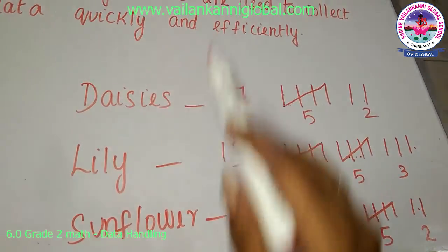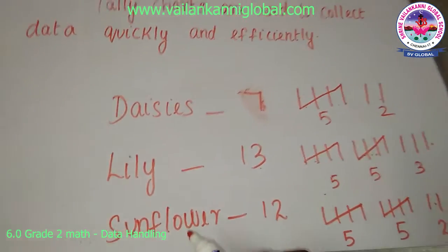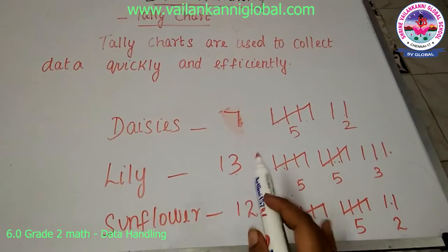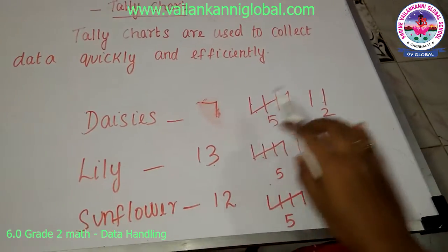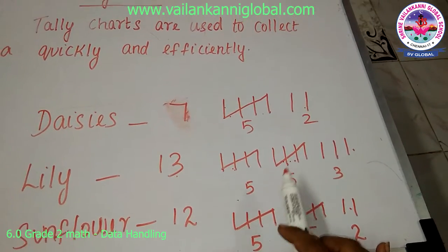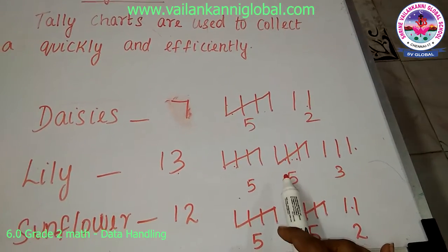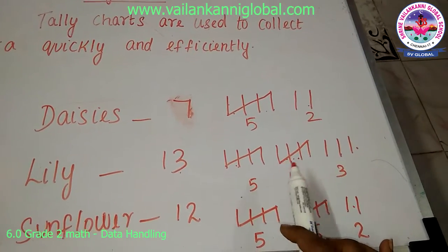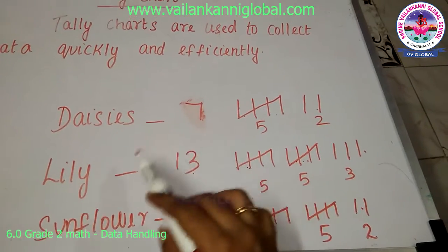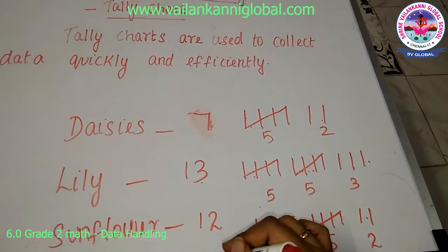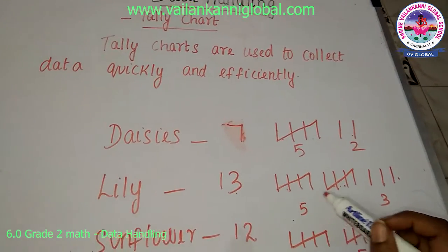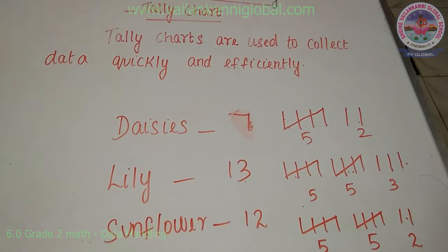It can also work the other way round — tally marks will be given and you have to find the number. This way of representation is clearer, more efficient, and quicker compared to other methods. This is how a tally chart is represented.